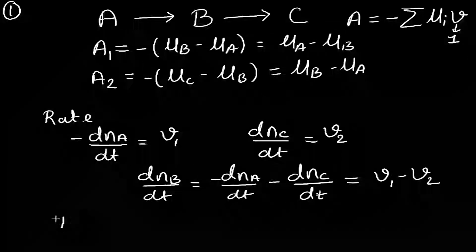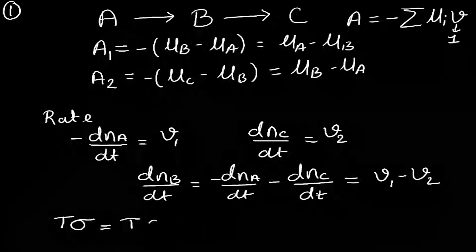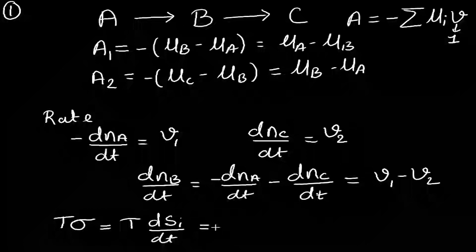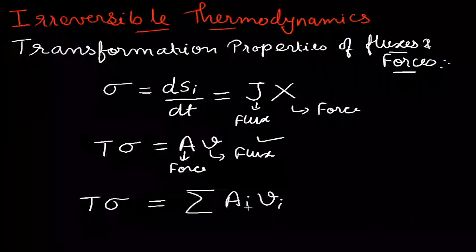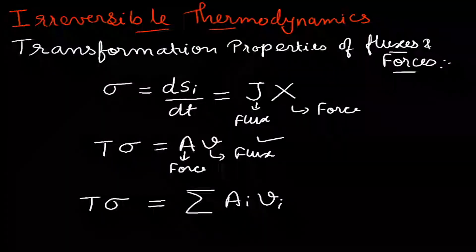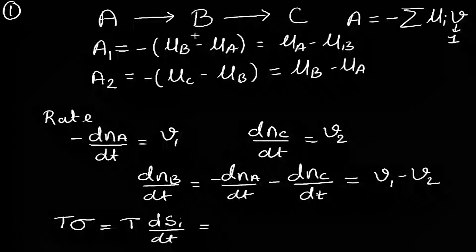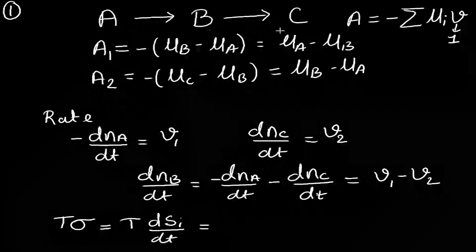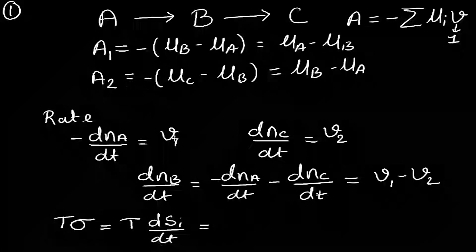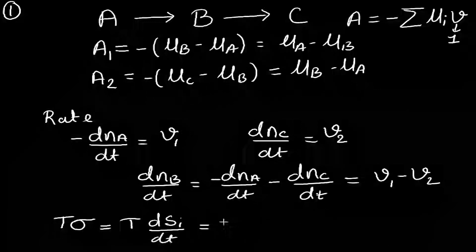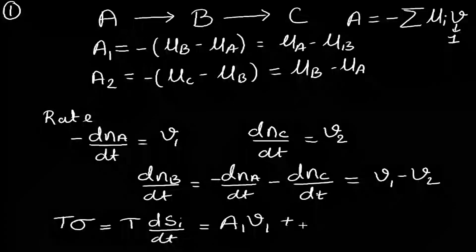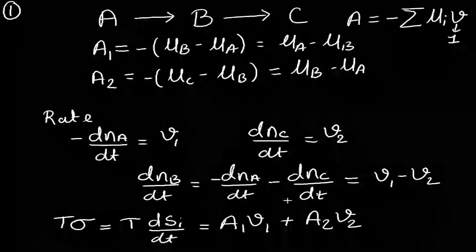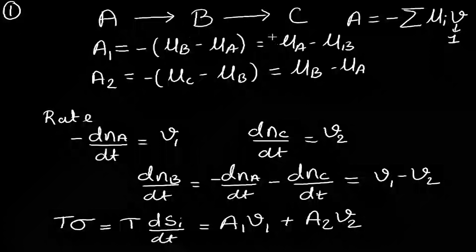The entropy production for the consecutive reaction can be written as tσ = tdSi/dt. Since A1 is the chemical affinity and μ1 is the rate for the first reaction, and A2 and μ2 are for the second reaction, the entropy production is: tσ = A1μ1 + A2μ2.